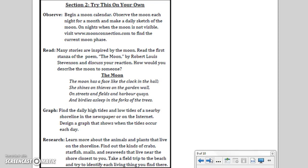Graph: Find the daily high tides and low tides of a nearby shoreline in the newspaper or on the internet. Design a graph that shows when the tides occur each day. Research: Learn more about the animals and plants that live on the shoreline. Find out the kinds of crabs, starfish, snails, and seaweeds that live near the shore closest to you. Take a field trip to the beach and try to identify each living thing you find there.